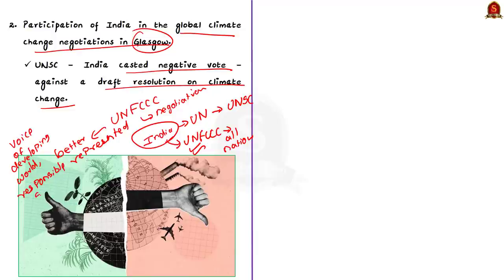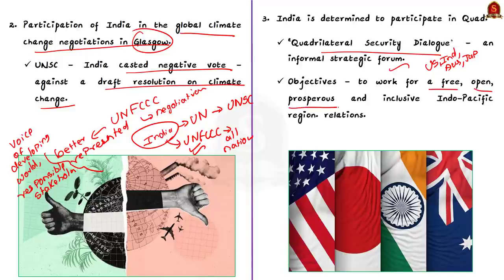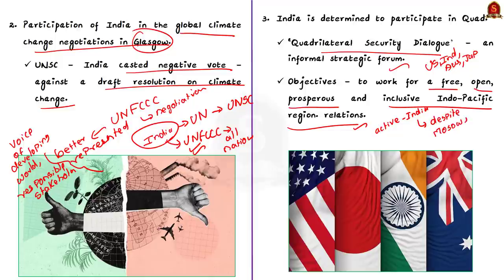The third example: India is determined to participate in Quad, which is also known as the Quadrilateral Security Dialogue — an informal strategic forum comprising four nations, namely the United States of America, India, Australia, and Japan. One of the primary objectives of the Quad is to work for a free, open, prosperous and inclusive Indo-Pacific region. India has been an active participant in the Quad in the recent past. India is strengthening its participation in the Quad despite strong words from Moscow and China. This shows India's commitment to strategic autonomy and its ability to take issue-based decisions in international relations.